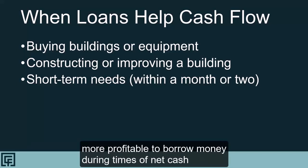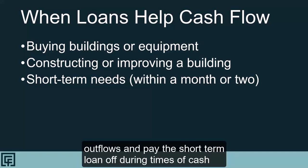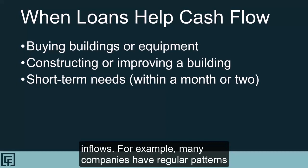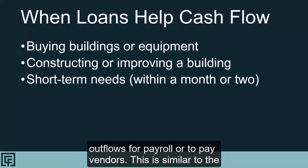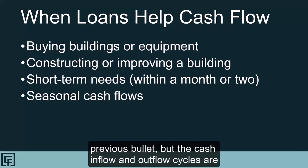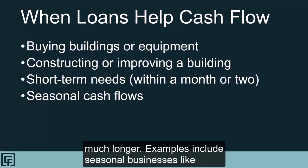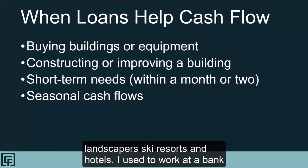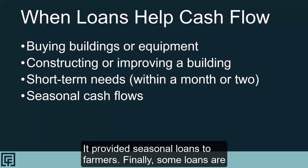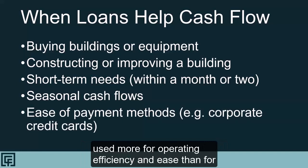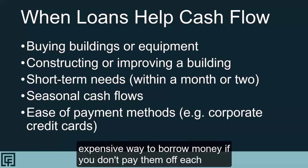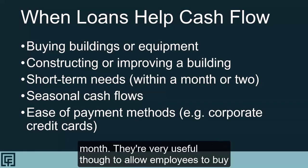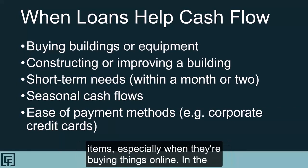A very common use is for short-term lending needs. For companies with healthy cash flows, it's more profitable to borrow money during times of net cash outflows and pay the short-term loan off during times of cash inflows. Many companies have regular patterns of large cash inflows from sales followed by big cash outflows for payroll or to pay vendors. The cash inflow and outflow cycles can also be much longer — examples include seasonal businesses like landscapers, ski resorts, and hotels. Some loans are used more for operating efficiency, such as corporate credit cards, which are a very expensive way to borrow money if you don't pay them off each month.